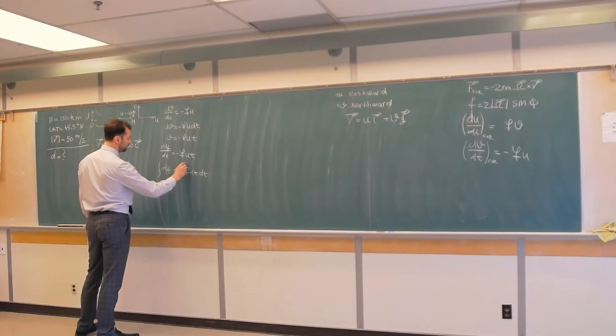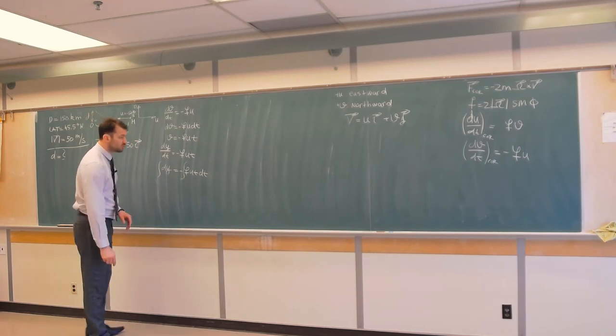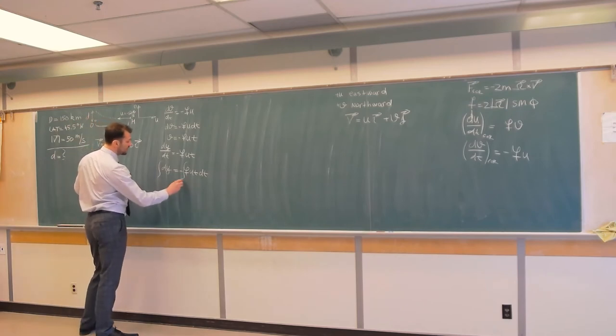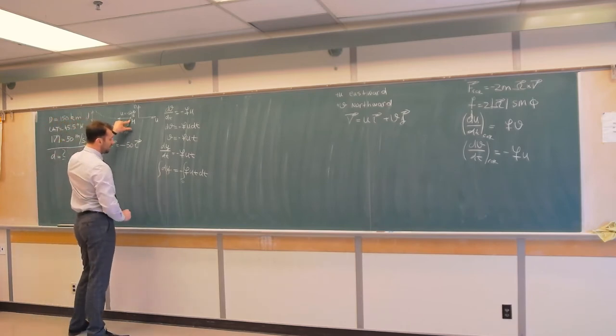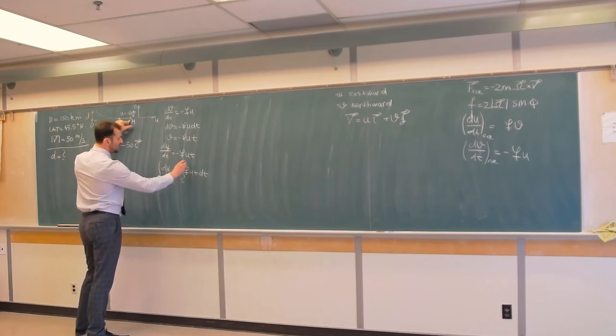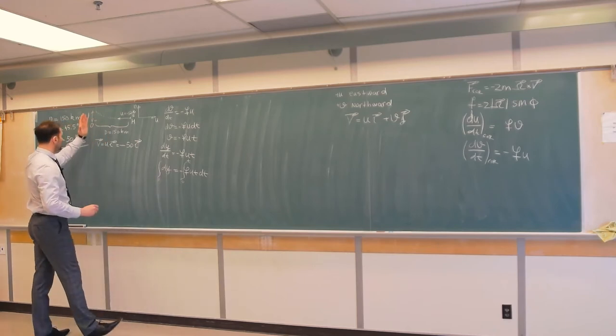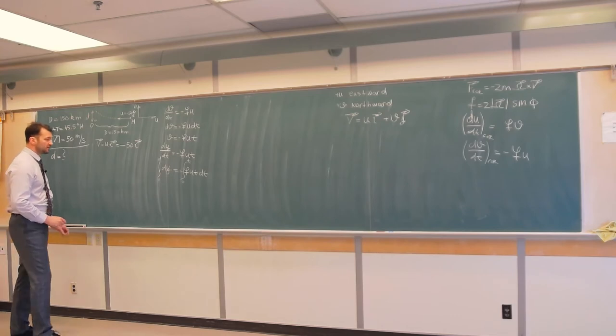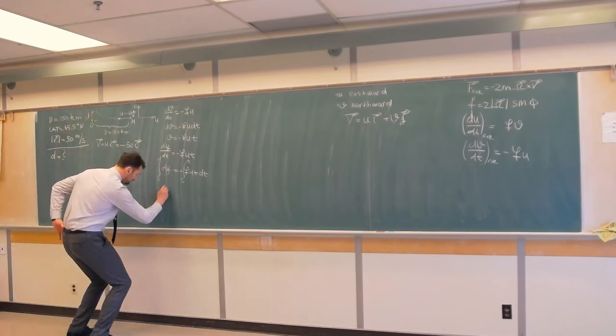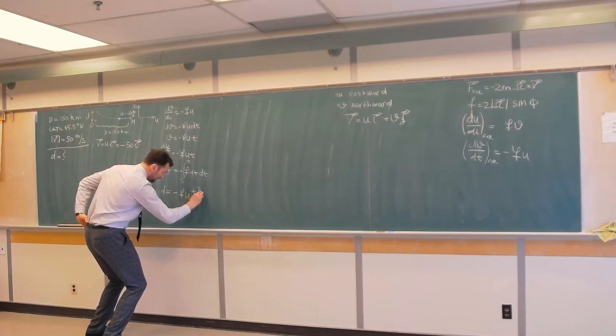Now we integrate this again, and the problem doesn't say anything, so we assume that f is constant, and u we assume is constant. So I'm integrating from time t equals 0, and that's the time when the air parcel is in Montreal, and deflection in the meridional direction is 0. And at some time t, that's the time when the air parcel is at the longitude of Ottawa, we have deflection d, namely deflection that we are interested in. And that means that d is equal, if you solve this integral, you get negative fu t squared over 2.